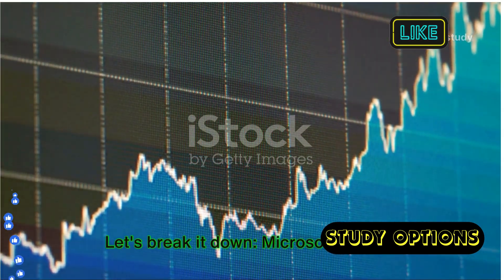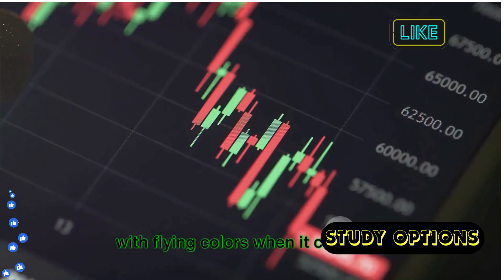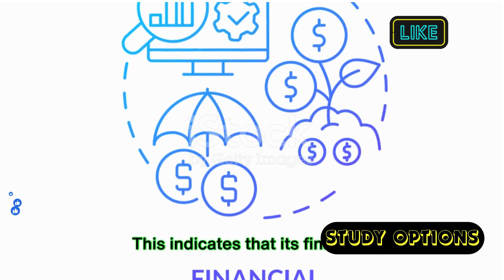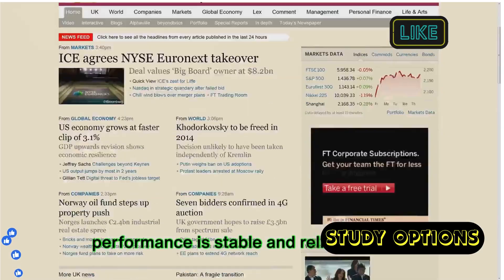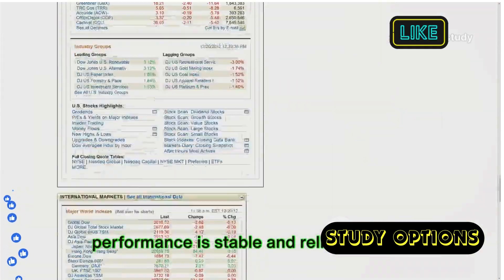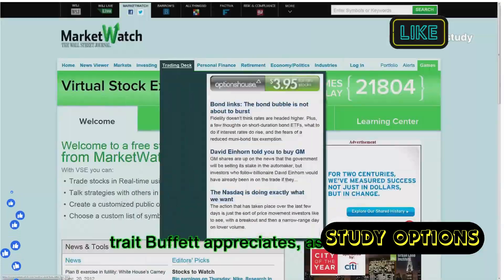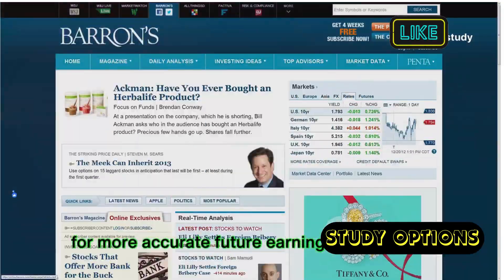Let's break it down. Microsoft passes with flying colors when it comes to earnings predictability. This indicates that its financial performance is stable and reliable, a key trait Buffett appreciates, as it allows for more accurate future earnings projections.